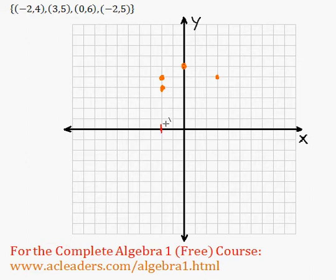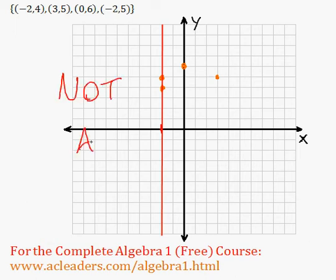on the graph, and if it hits more than one point, then it's not a function. So in this case, if I draw a line over here, a vertical line, we hit two points. And for that reason, this relation is not a function because it fails the vertical line test.